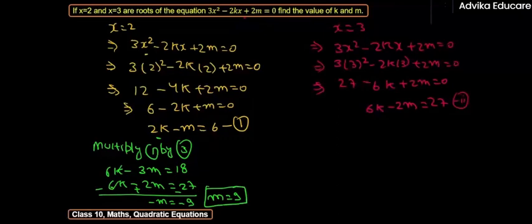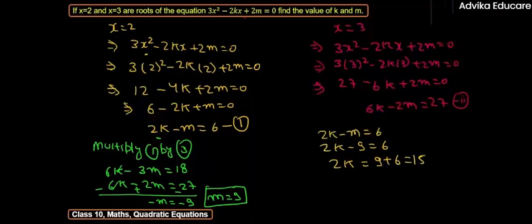Now we have m value, and we will put that to find k value easily. So put m value in the first equation: 2k - m = 6, so 2k - 9 = 6. 2k = 9 + 6 = 15, so k = 15/2.